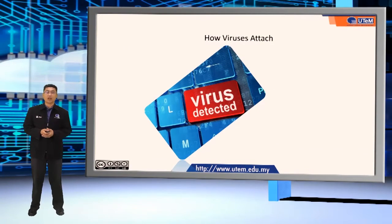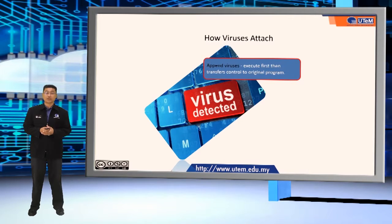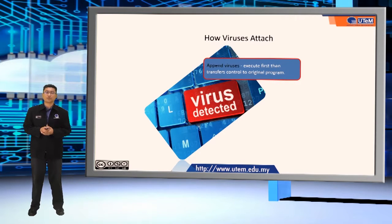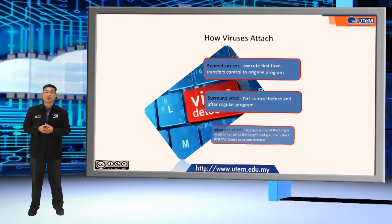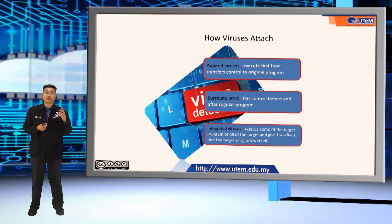First, we explore how the virus attaches. A virus can attach using append viruses, which execute first then transfer control to the original program; a surround virus, which has control before and after the regular program; or integrated viruses, which replace some of the target program and give the effect that the target program works.